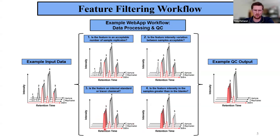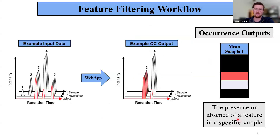Step four is to look at whether features exceed the intensity measured in the blanks. Feature four is reproducible, highly consistent, and greater than the blank. Feature five is reproducible and consistent but has the same values as the blanks — so it's removed. Ultimately, we get output cleaned of these features based on whether they pass user-defined thresholds. The web app takes our input data, makes filtering decisions, and provides us with outputs.